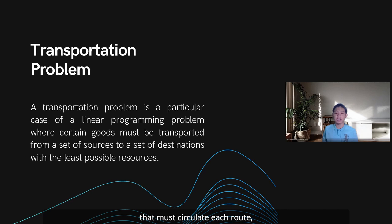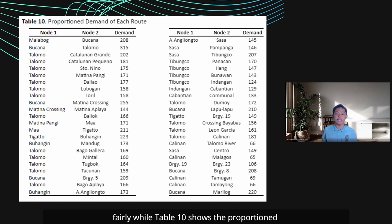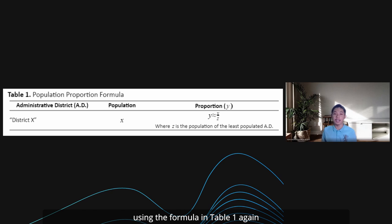To proceed, the proponents labeled 11 administrative districts as sources, the included links or routes as destinations, and the jeepneys as commodities. Table 9 shows the supply of 7,610 jeepneys, proportioned to circulate each administrative district fairly, while Table 10 shows the proportion demand for each route. These values or proportions were yielded using the formula in Table 1, again according to their respective populations. The yielded values were then organized into a transportation tableau, as shown in Table 3, with no unique cost given to each cell.